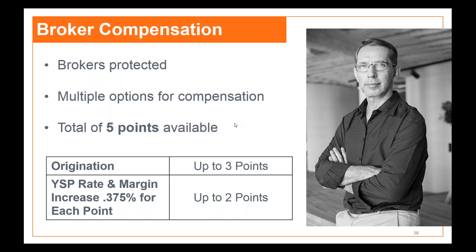Moving on to broker compensation: you can make up to five points — up to three in origination and up to two points in yield spread. We have the lowest yield spread adjustment to rate in our space — most other lenders charge half a point in rate for only one point of yield spread; we charge 0.375. Realistically, the average is usually between two and three points. Silver Hill does not charge origination points ourselves — we only have closing fees — so you the broker can make the bulk of the compensation on any deals you send to us.